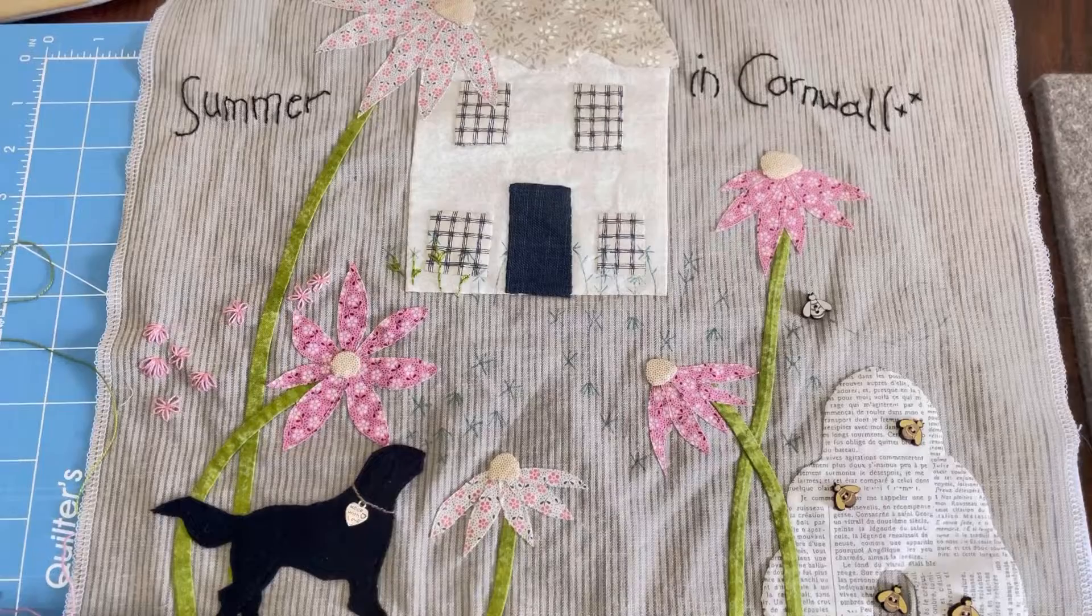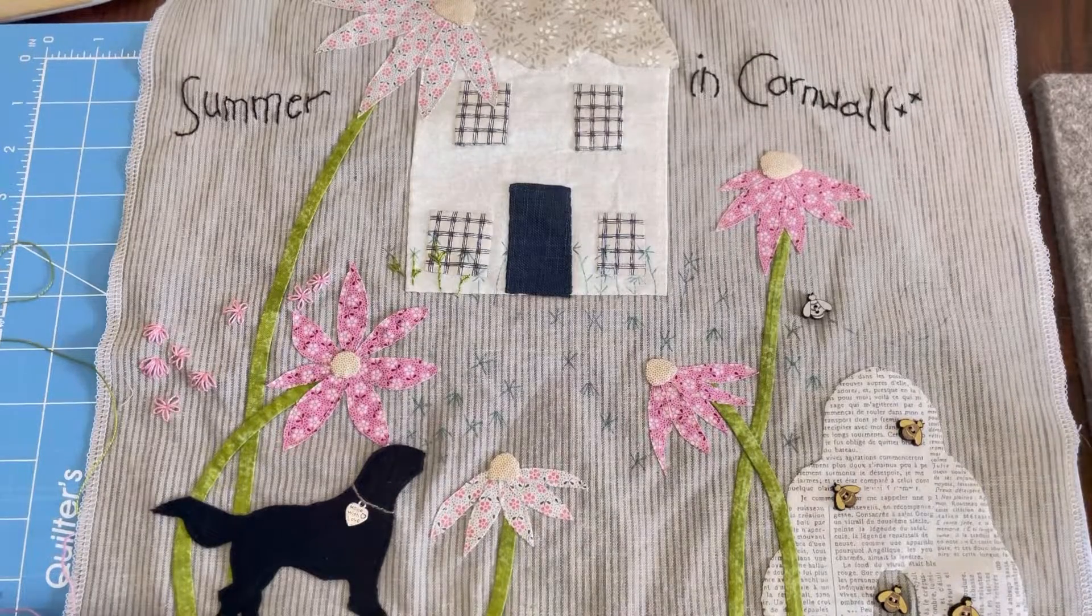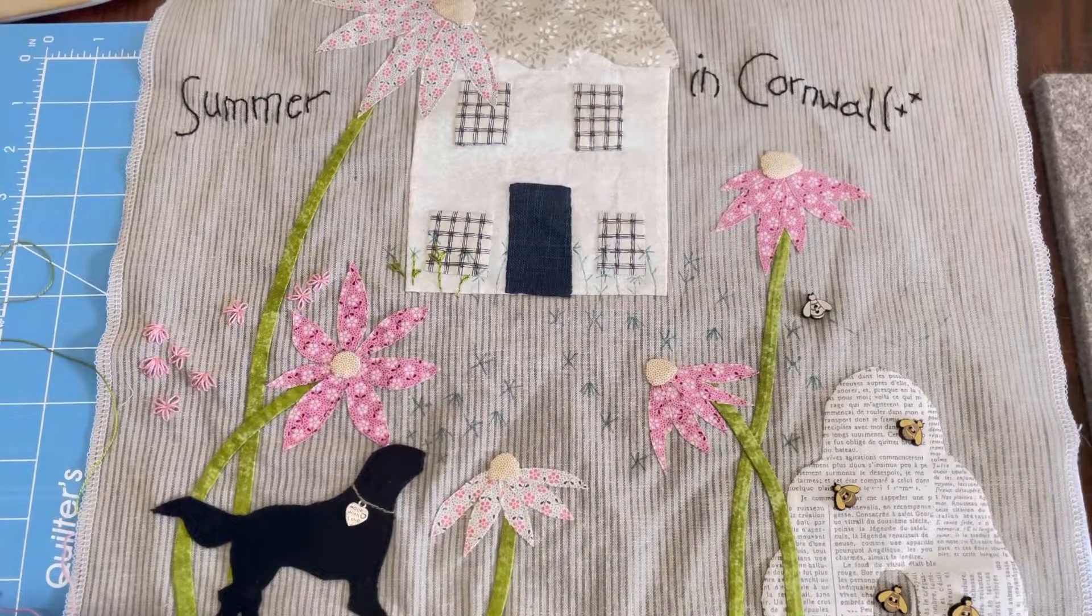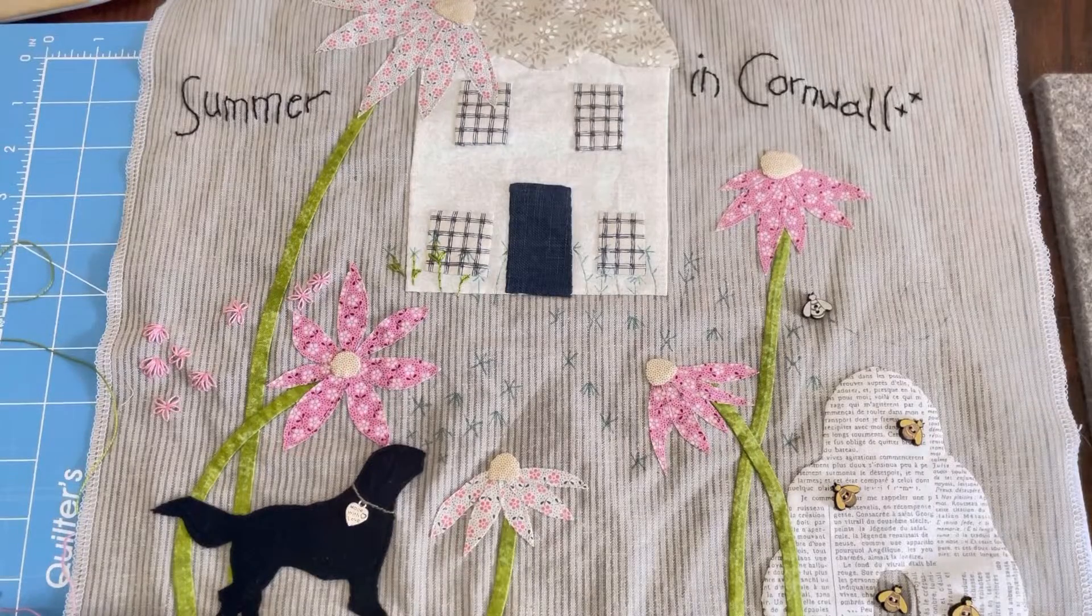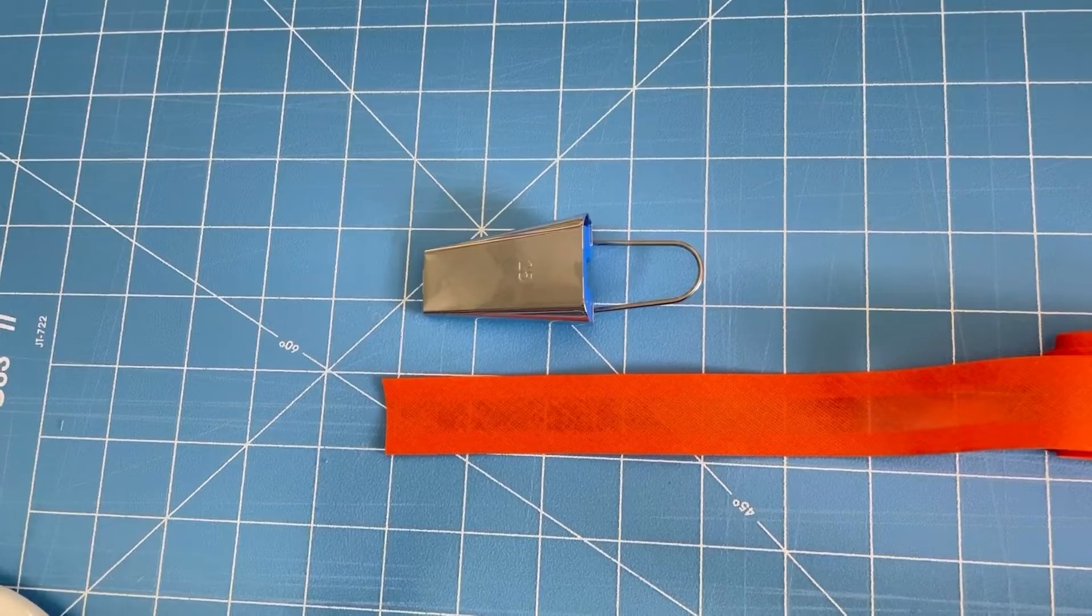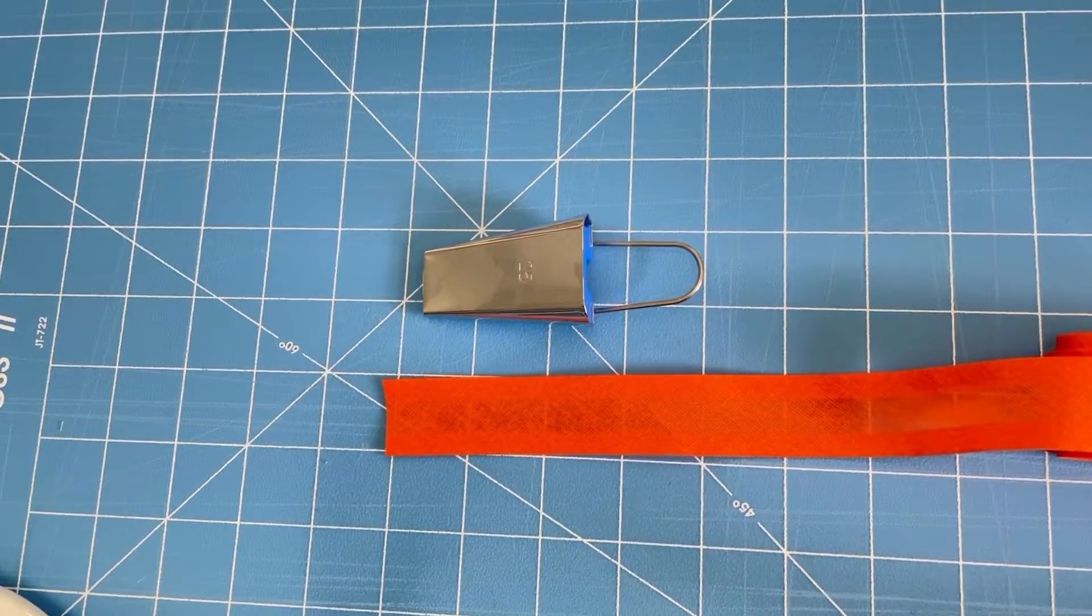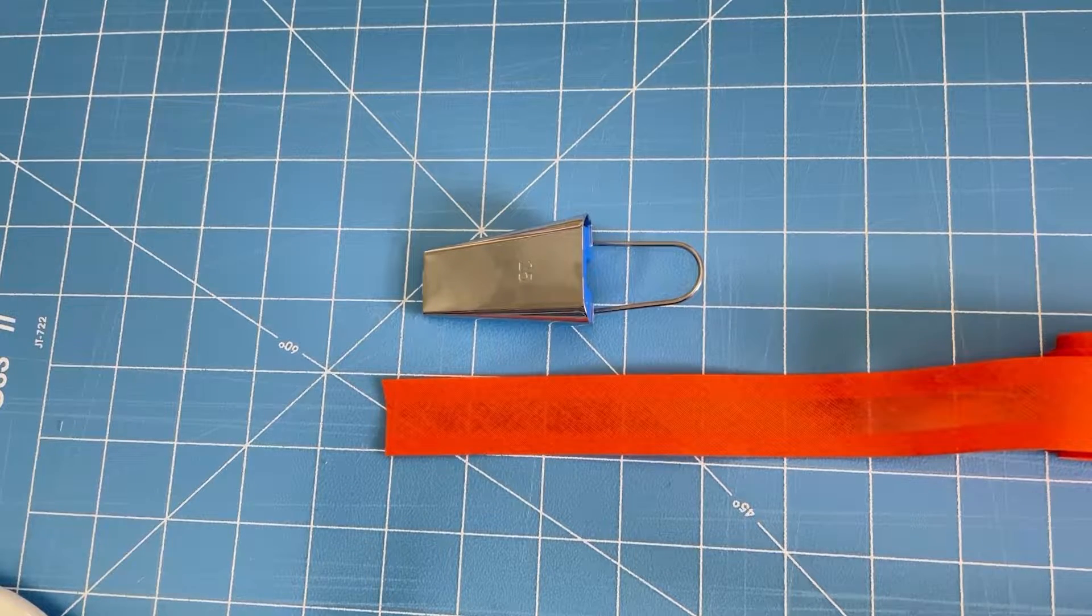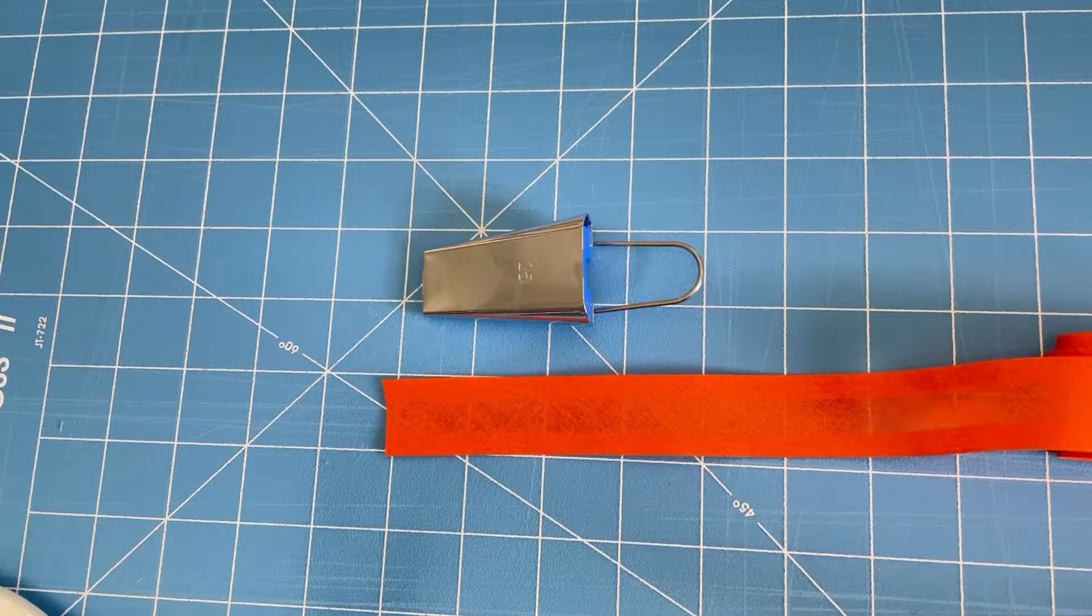But the other thing when this set came is I thought this is really quite handy because the biggest one is a handy size as well. So this is the 25 millimetre, which is the biggest one in the set. It basically comes out at almost an inch, the bias binding, the width.